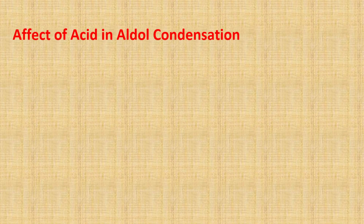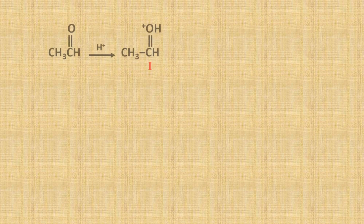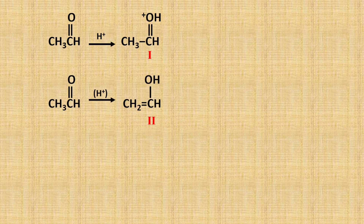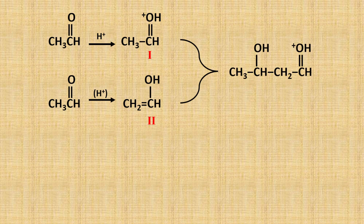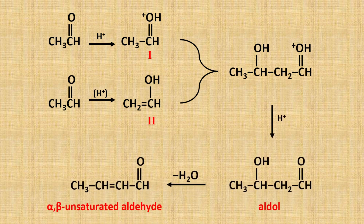Likewise, alkali and acid also catalyze the aldol reaction. However, the efficiency of acid is lower than alkali. The catalytic action of an acid differs from alkali. First, the protonation of the carbonyl group takes place in the presence of acid to form compound 1. At the same time, the acid promotes the compound to form its enolic form. Then, the protonated carbonyl compound attacks the alpha carbon of the enol form of the other molecule to produce the aldol, which later eliminates the water molecule to give the alpha-beta unsaturated aldehyde.